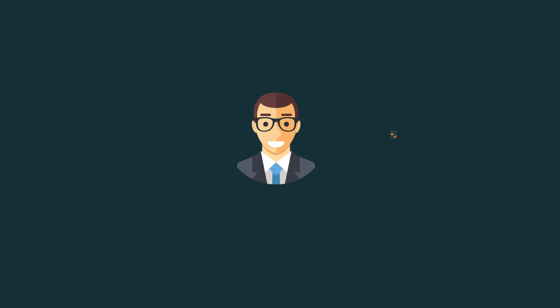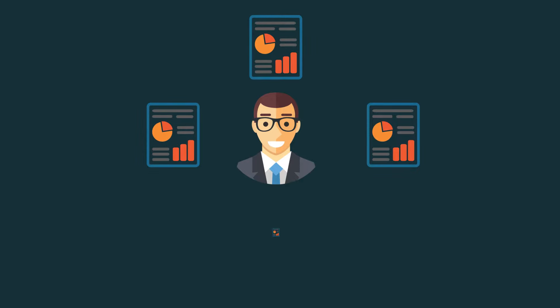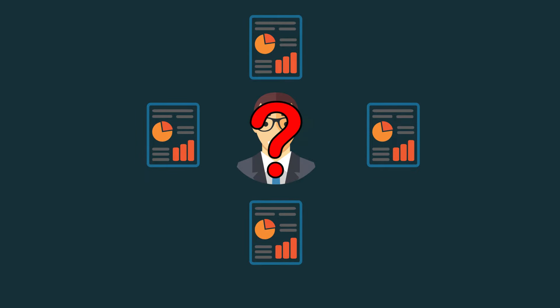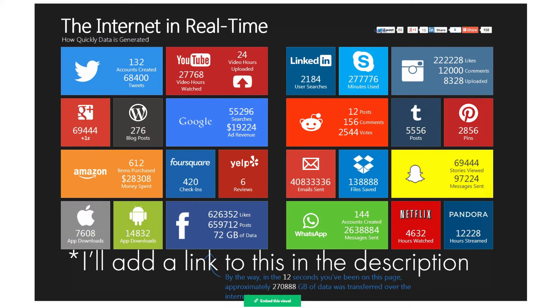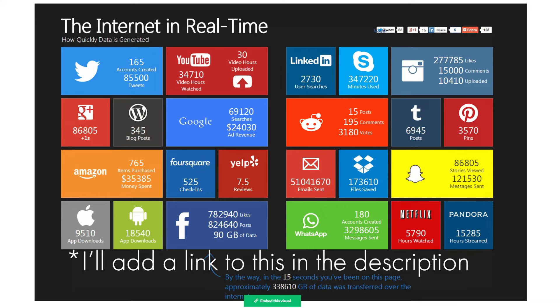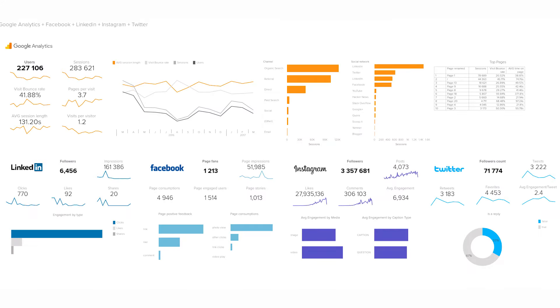All of this data is separate in what we call silos, meaning it's hard to easily get a global 360 view of how your business is performing in all of its activities, without having to look at multiple reports in different places. What we really need to do is to bring these disparate data sources together and analyse them together to get a clearer picture.